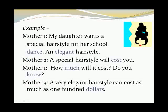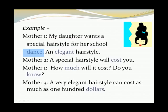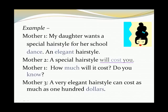How did I know that the words in blue would receive primary stress? In the first sentence, it's all new information, so the final content word is 'dance.' In the next phrase, 'an elegant hairstyle,' hairstyle is old information, so the content word left to stress is 'elegant.' In the next sentence, 'a special hairstyle' is old information, so 'cost' is the only content word left to stress. Now we have a question, and the old information is about cost. The final content word: 'much.' In the next question, it's all new. Our final content word is 'know.'